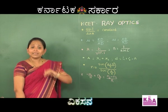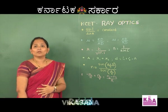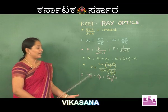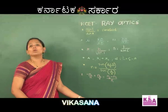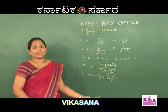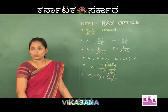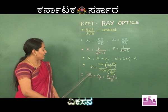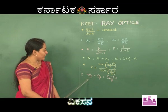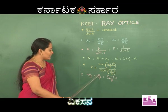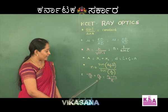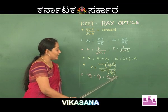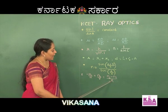The next concept is refraction through a spherical surface. The formula derived is: −n1/u + n2/v = (n2 − n1)/R.